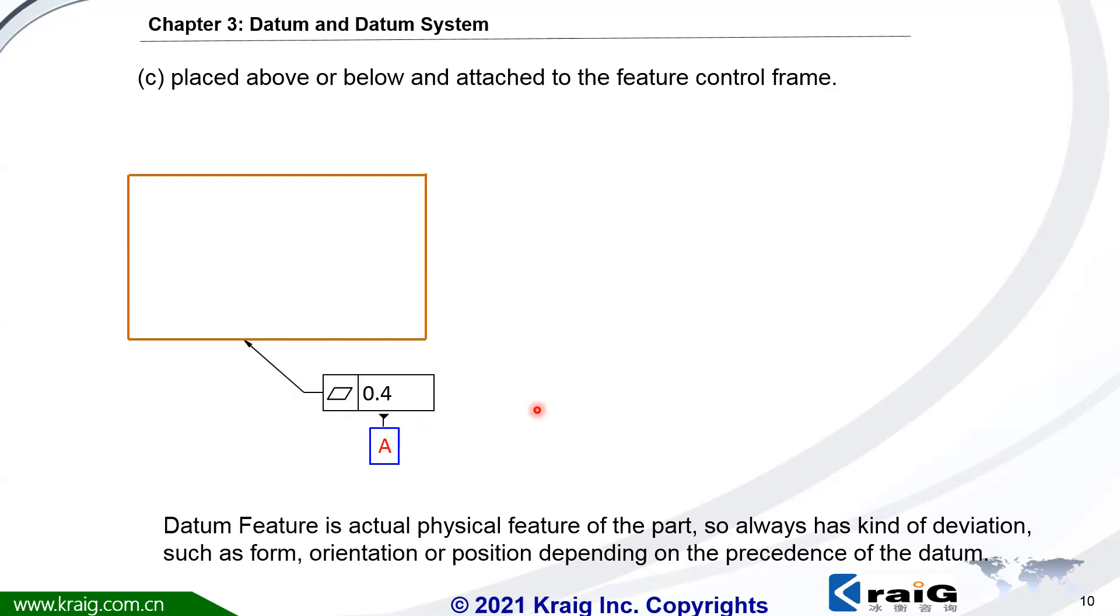And this is the proper way to specify datum, because for any datum feature, it doesn't matter if it's a primary datum or secondary datum or tertiary datum, should always have either form or orientation or location tolerance. We should specify the geometric tolerance of the datum feature first, and then we're going to use this as a datum. These two joints have the same meaning. Datum A is the bottom surface.